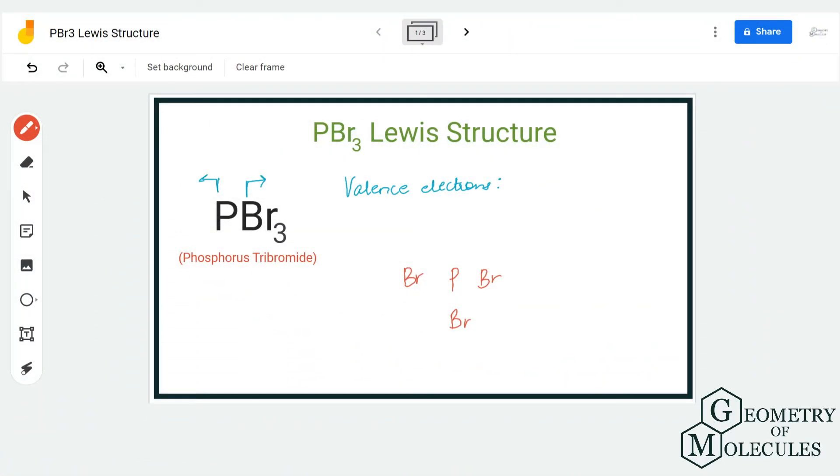Hi guys, welcome back to our channel. Today in this video we are going to look at the Lewis structure for PBr3 or phosphorus tribromide. To understand the Lewis structure for any molecule, it's essential to know the total number of valence electrons for that molecule.